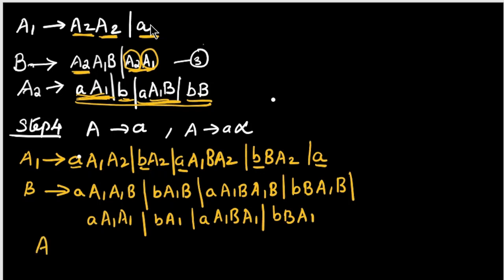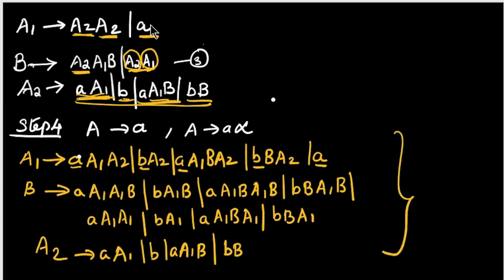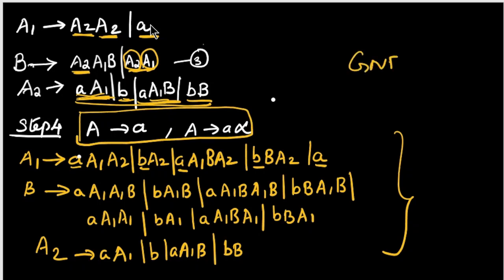Now A2's productions are already in GNF format since they all start with the terminal 'a'. All the productions are now of the form A gives a or A gives a alpha, which is the Greibach Normal Form. This completes the conversion of the CFG to GNF.